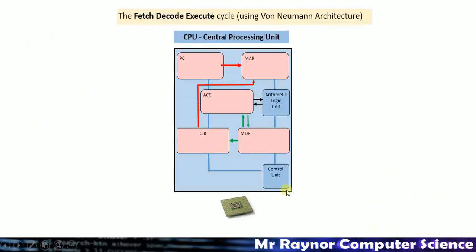Here's a little diagram — let's run through a quick example. The program counter stores address 0, which copies over to the memory address register, so at this point they both hold the same value. That tells us where to fetch the data or instruction from in the RAM. The data is loaded into the memory data register, copied into the current instruction register. If a calculation is needed, the ALU calculates it and stores the result in the accumulator. These five registers are the key ones we need to be aware of.